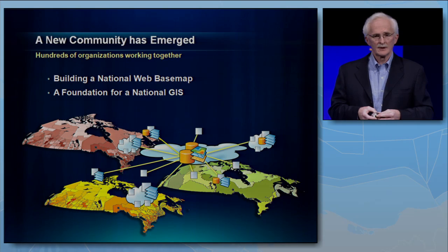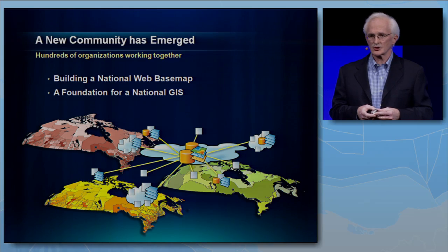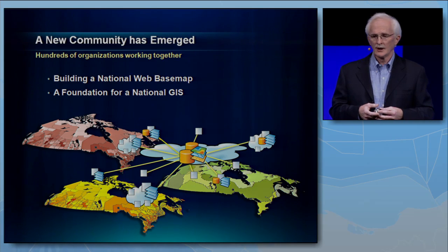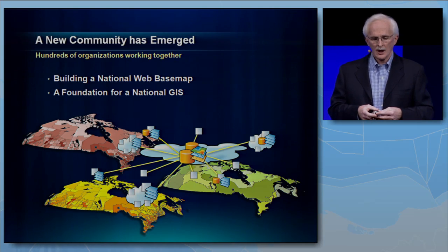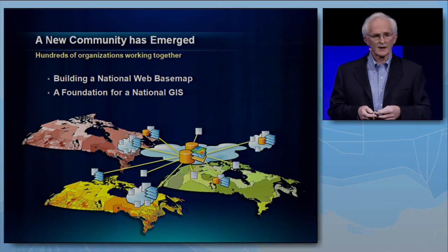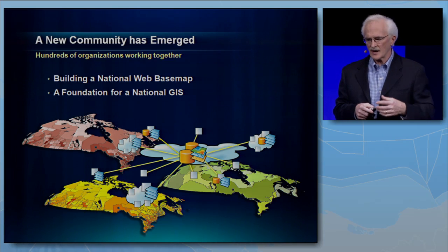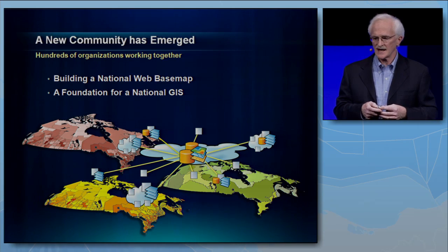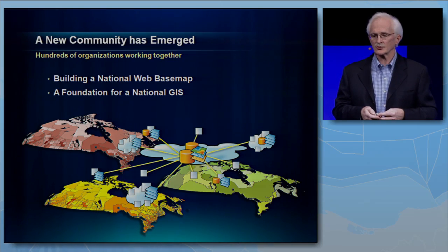In summary, the community map of Canada program has exceeded our expectations considerably, as dozens of organizations across the country are now working together in ways they've never done before to create and maintain this community map that they own. In addition, many GIS applications are emerging that couldn't have been done without it. Finally, the idea of having a topographic base map updated by transactions is sweeping the country and people are now starting to build an infrastructure that's actually sustainable.